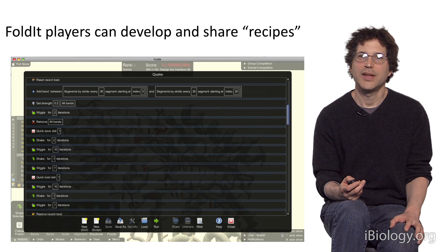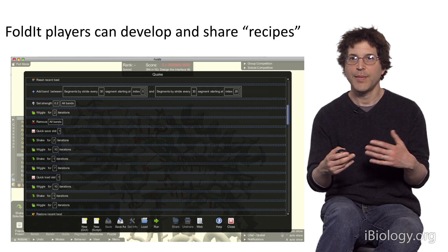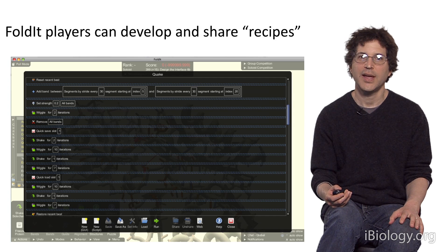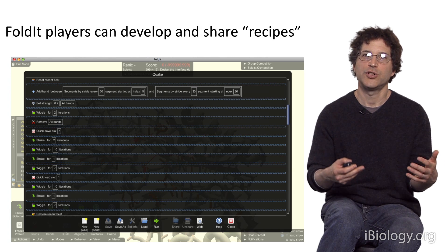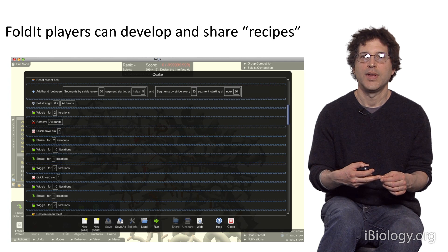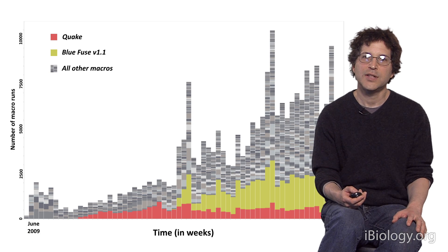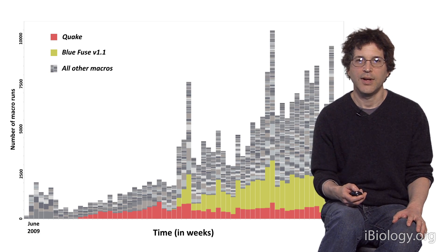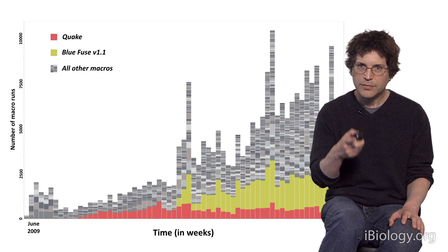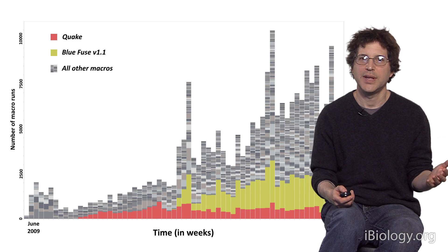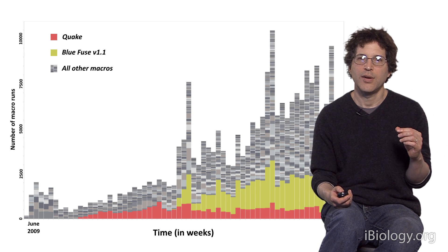The second example shows that Foldit players can come up with new algorithms. There are these automated Rosetta algorithms — buttons you can click — and we gave Foldit players the ability to create what we call recipes, which are different combinations of these automated algorithms. These recipes became very popular in the community and many got to be very sophisticated. This plot shows the time in weeks from when we first released the capability to make recipes, and each vertical bar shows the number of uses of a recipe during that week, with different colors representing how many times each recipe was used.